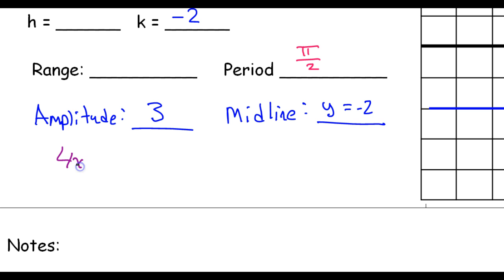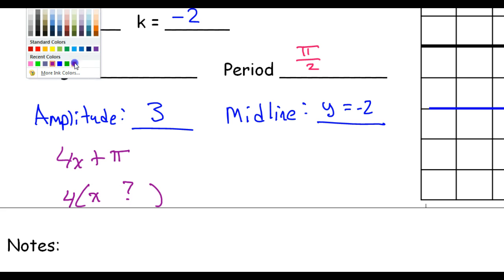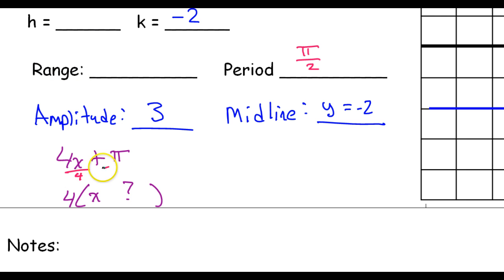We have this 4x plus π. To find the phase shift, you have to pull that 4 out of parentheses. And, of course, that will leave x. Now, to know what's going to go right here, you need to divide by the thing you just pulled out. I'm going to divide both of these by 4. So, that's why my phase shift is going to be π over 4.